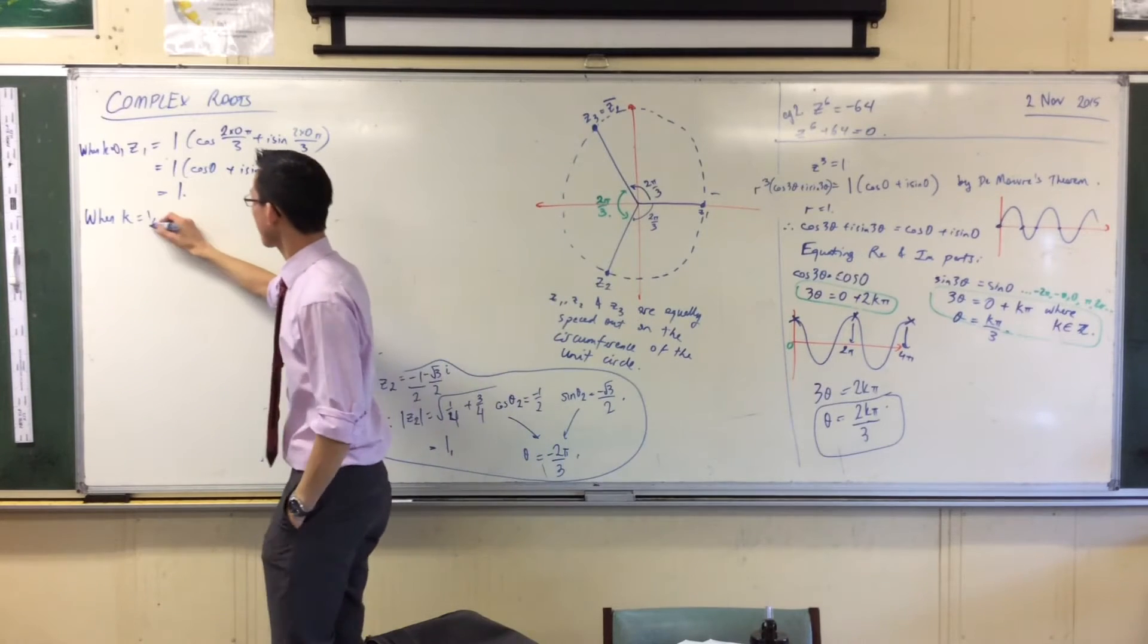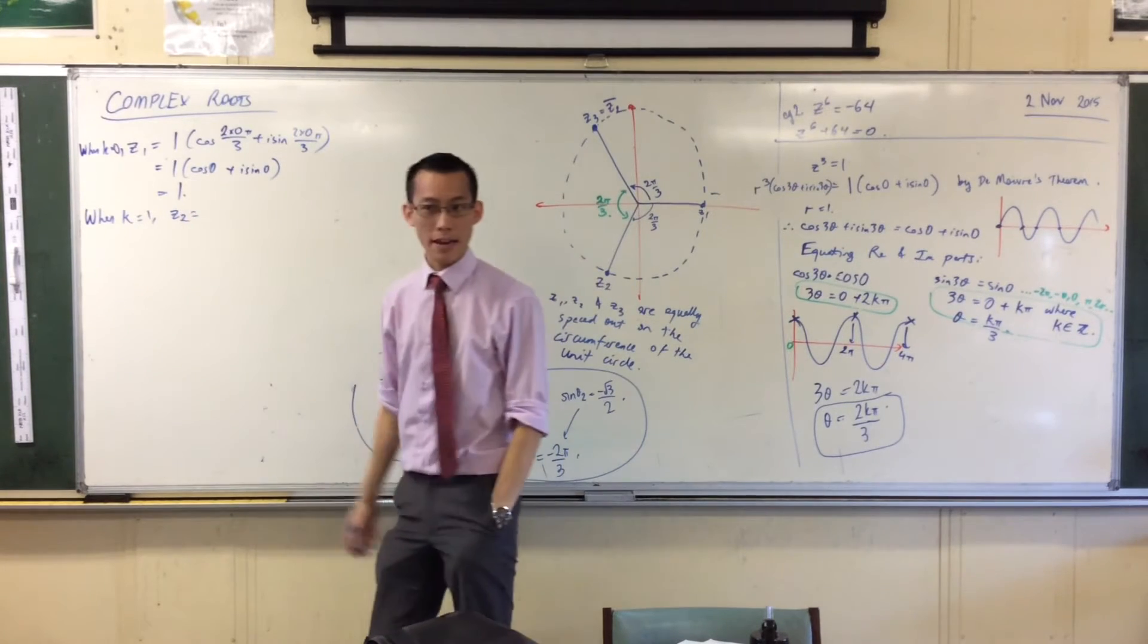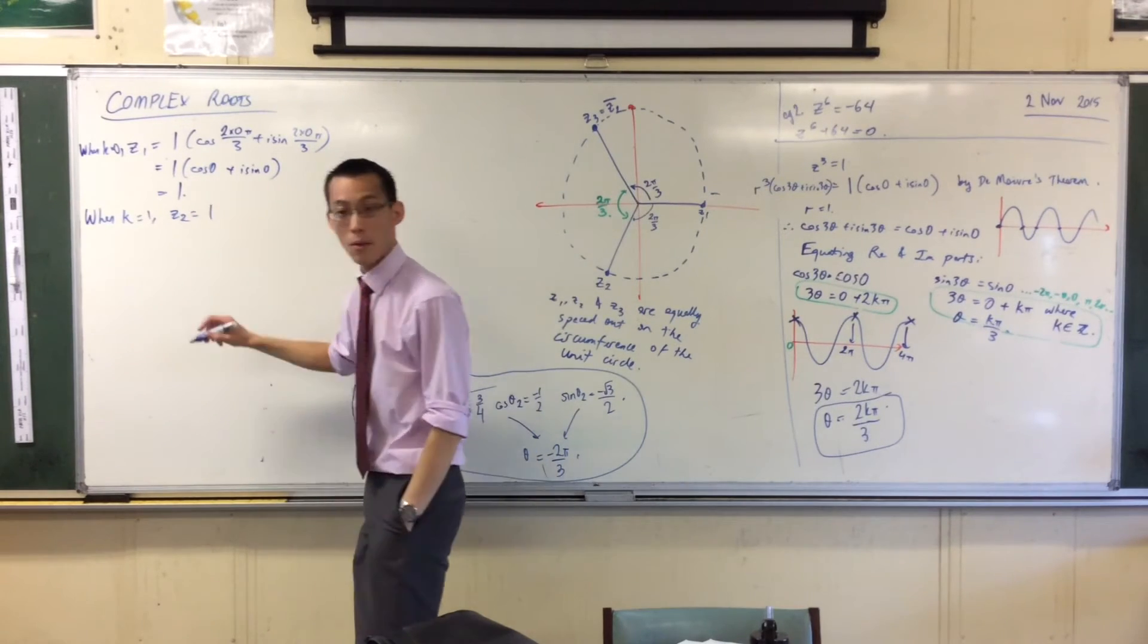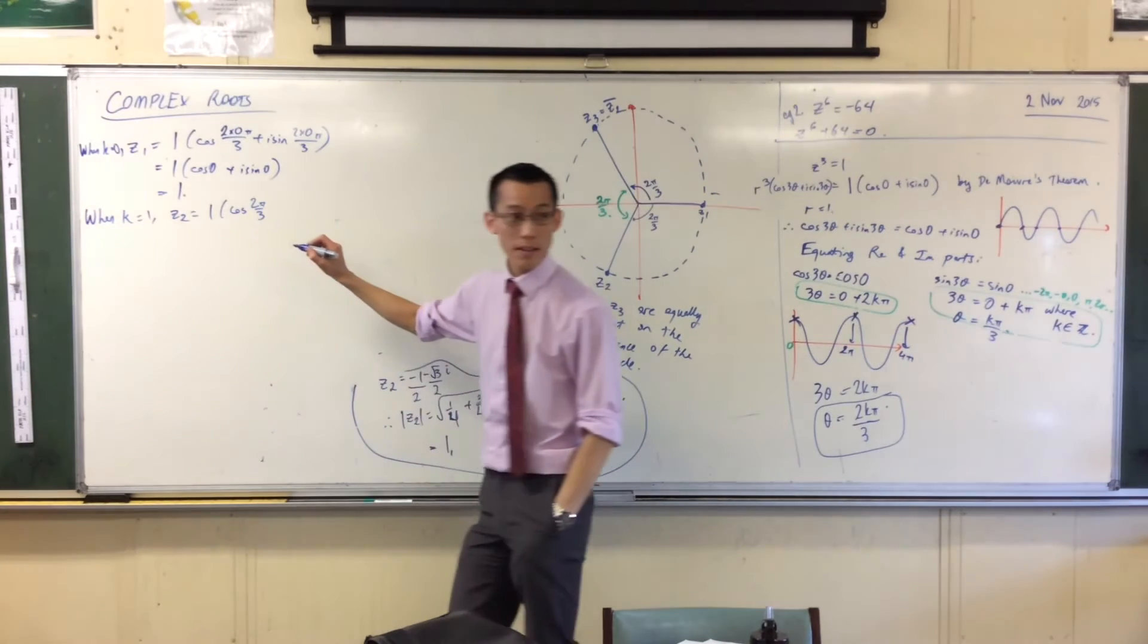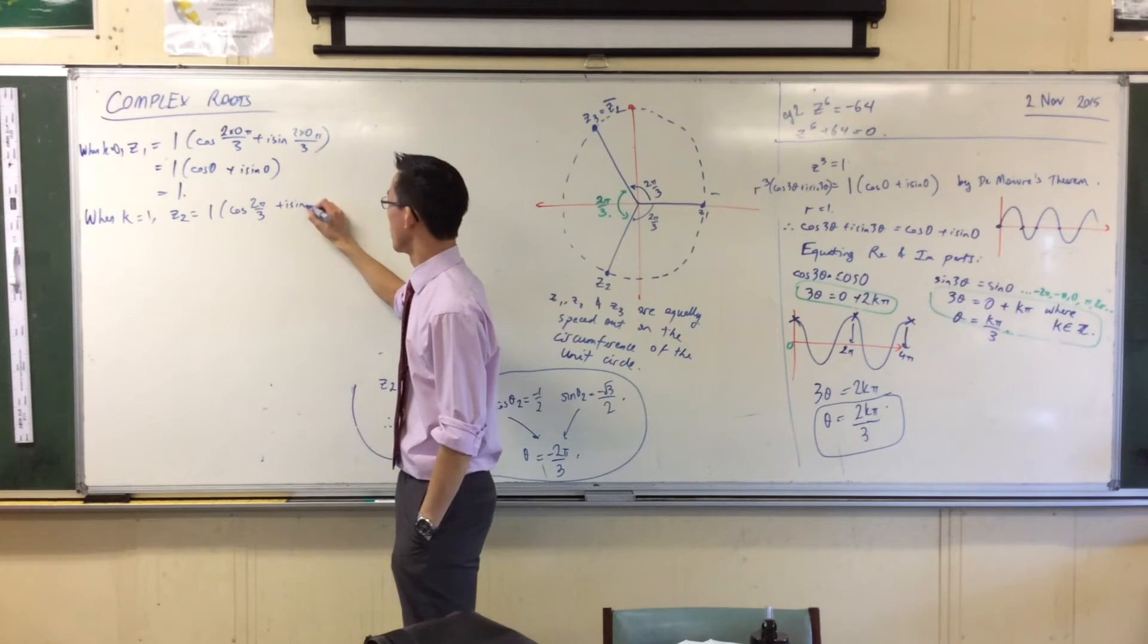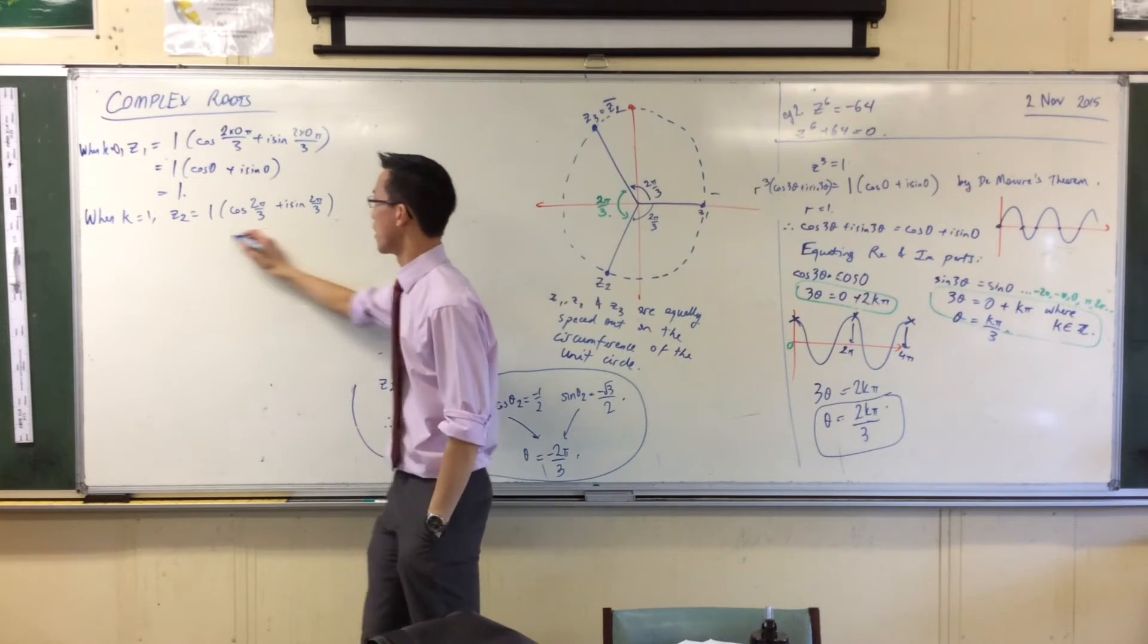So let's try k equals 1. This will give me my next value. So I've got, there's my modulus, then I go cos of 2 pi on 3, is my k equals 1, plus i sine 2 pi on 3.